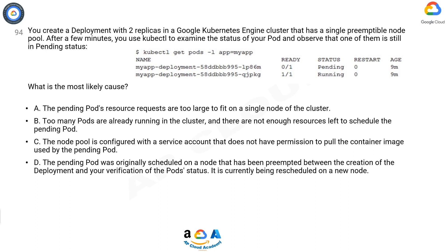C. The node pool is configured with a service account that does not have permission to pull the container image used by the pending pod. D. The pending pod was originally scheduled on a node that has been preempted between the creation of the deployment and your verification of the pod status. It is currently being rescheduled on a new node.